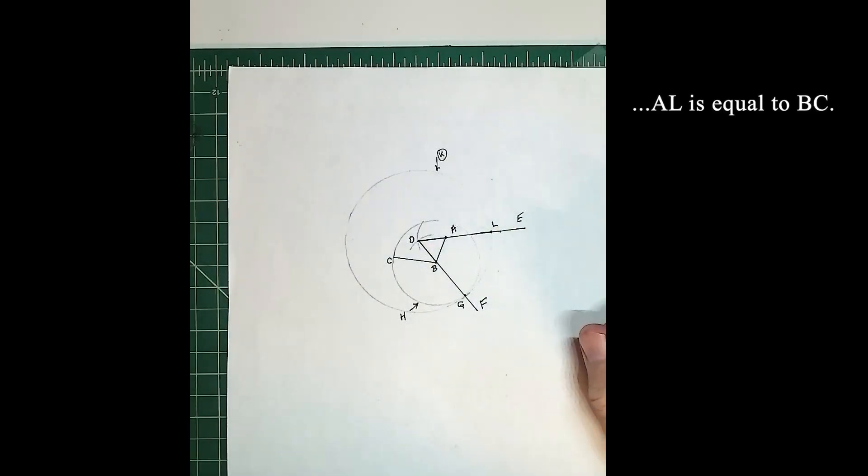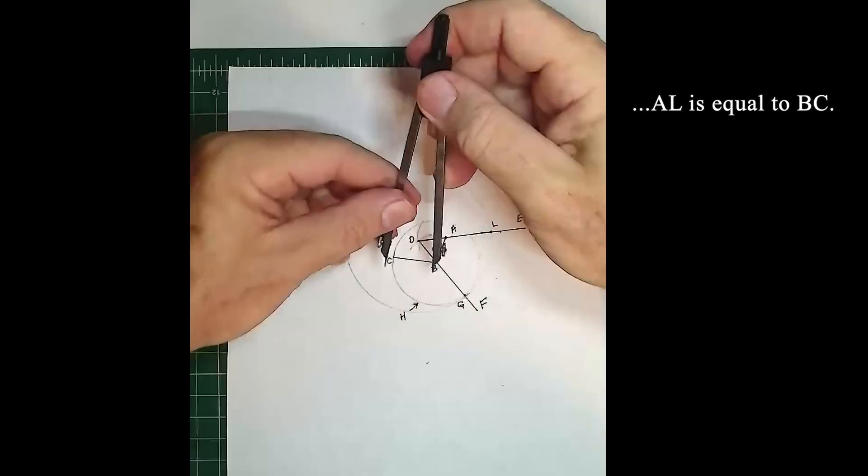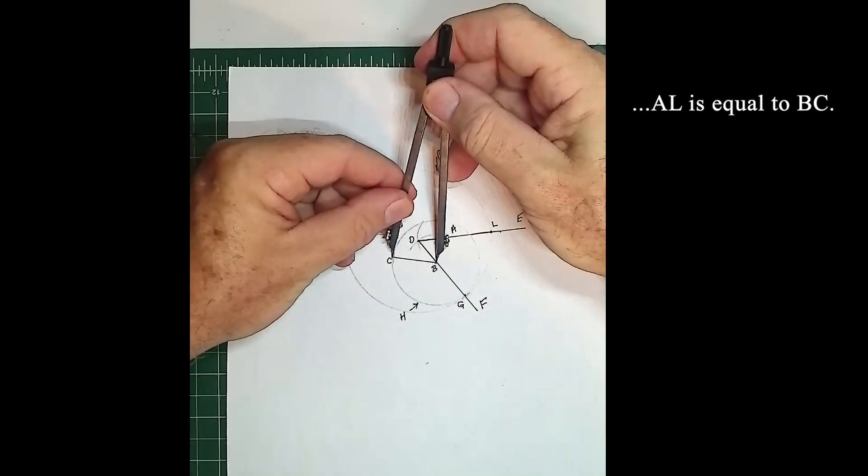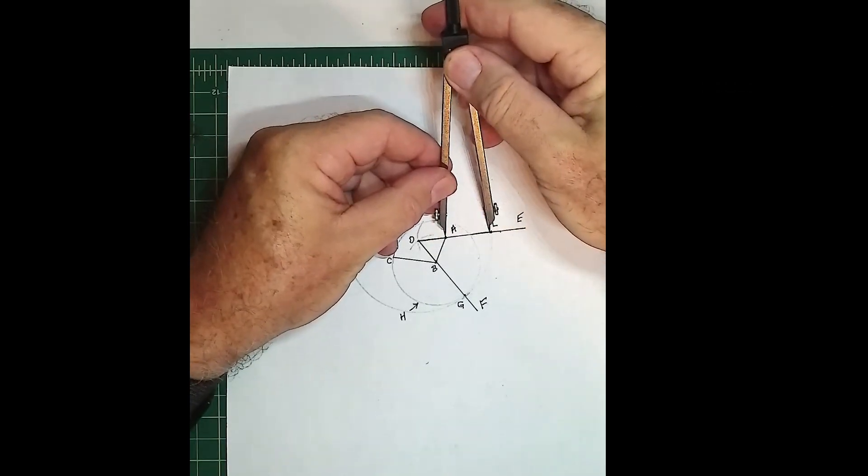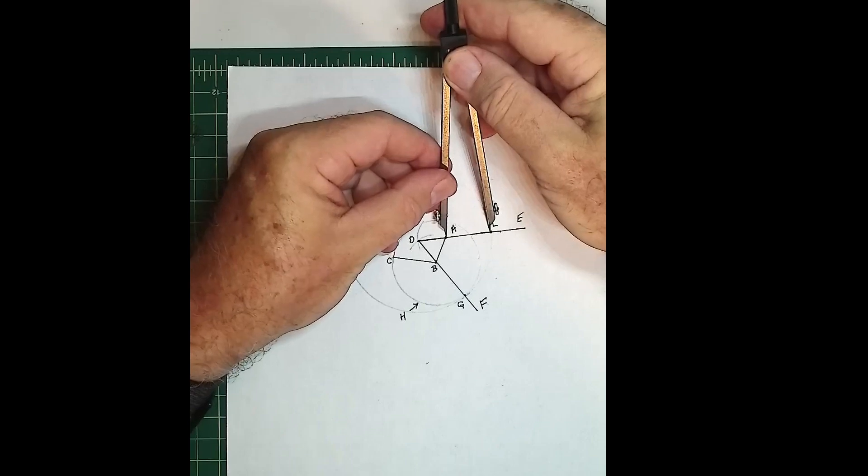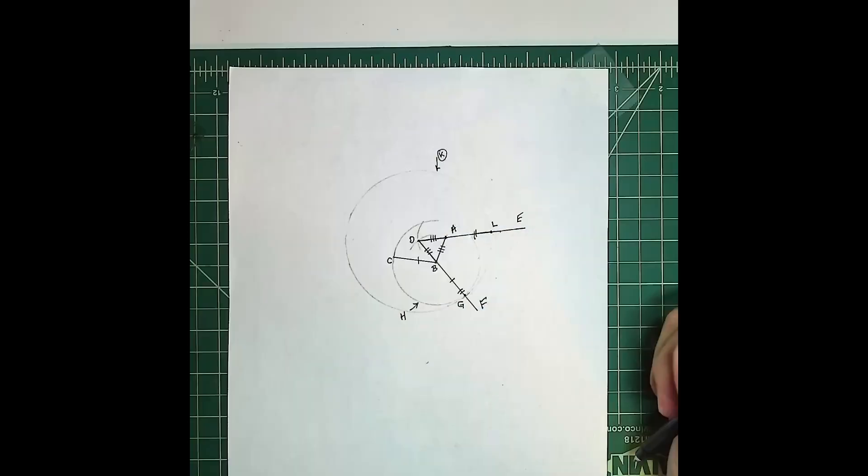What we have here: AL is equal to BC. So let's take a look at that, AL is equal to BC. So BC using these dividers, and AL. Just a line segment difference. AL is equal to BC.